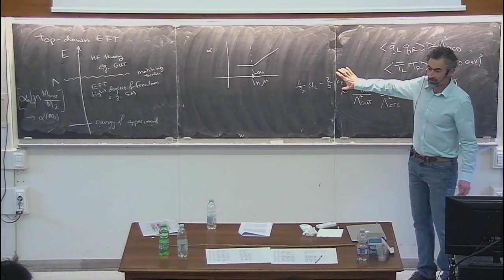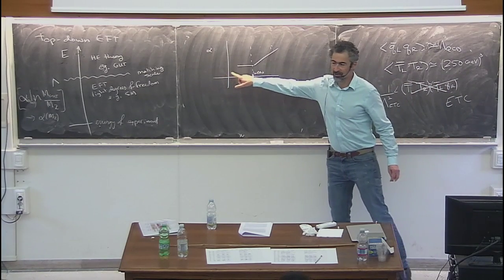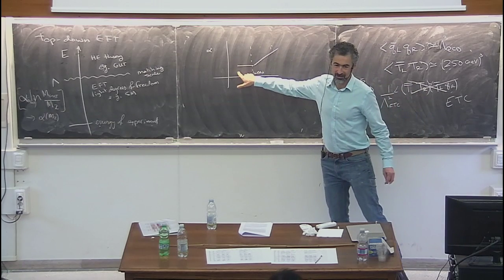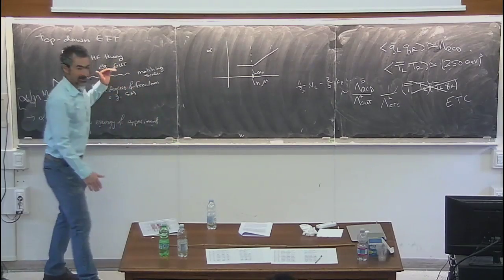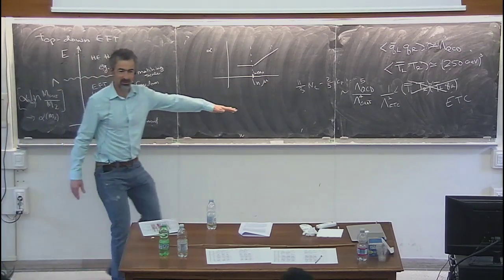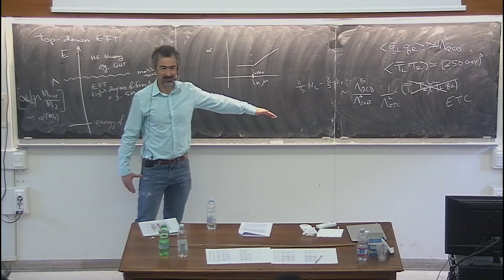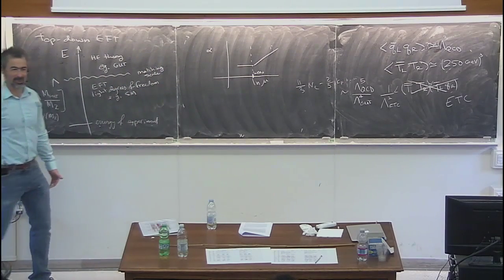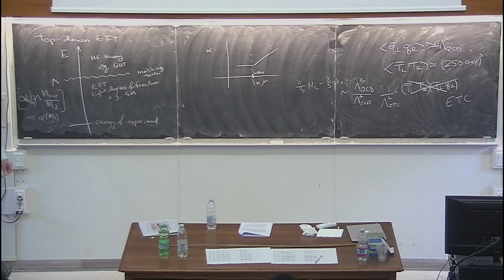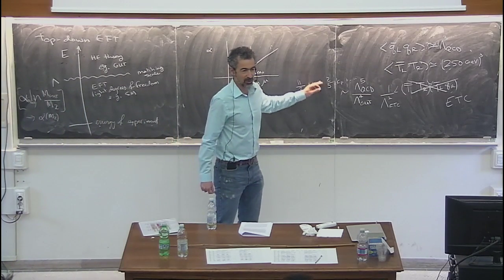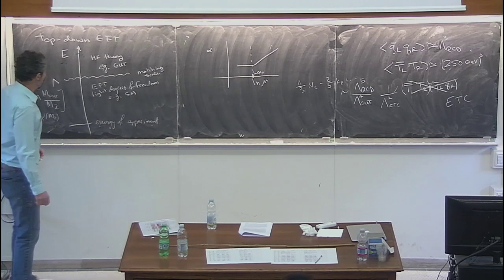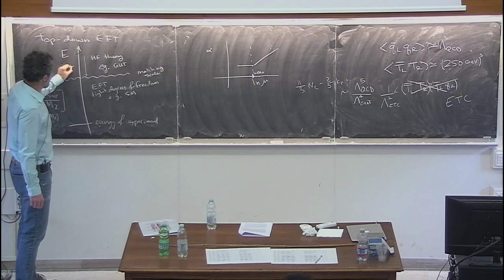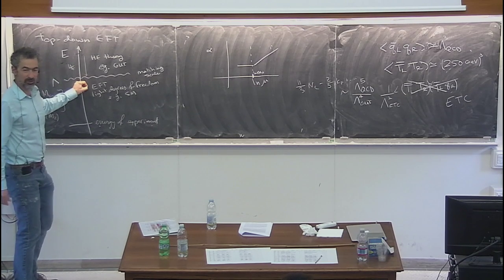If you calculate the beta function in a gauge theory, you get things like 11/3 N_c minus 2/3 N_fermion, and the beta function has no mass scale in it. That's why it's called a mass-independent subtraction scheme. But because there's no reference to scale, you have to ask: which beta function should you use? Above the GUT scale there may be more colored particles, and below thresholds you should use different particle content. The problem with MS-bar is that you cannot use one beta function everywhere - you have to use the beta function appropriate to each energy range and match at mass thresholds.